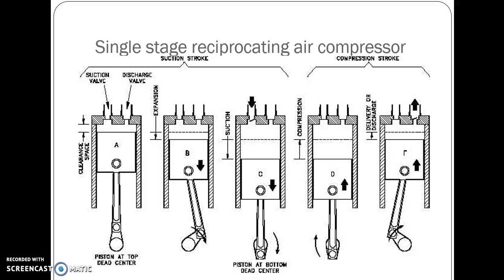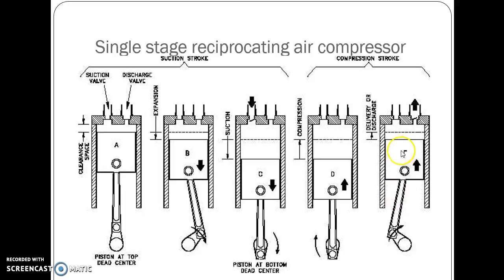The working of a single stage reciprocating air compressor is shown here. Three diagrams show the suction stroke and two diagrams show the compression stroke. In the first diagram, the piston is at the top dead center and both suction and discharge valves are closed. In the next diagram, the piston moves from top dead center toward the bottom dead center. In the third diagram, the piston reaches the bottom dead center and the suction valve opens. During the compression stroke, the piston moves from bottom dead center back to the top dead center, where the discharge valve opens. This is how the single stage compression works.